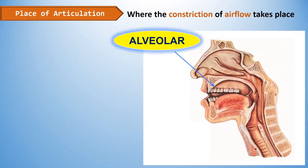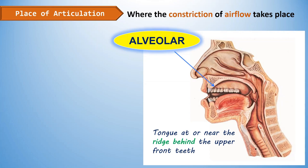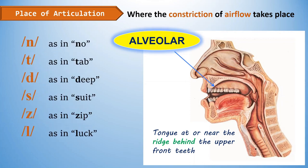The fourth place is alveolar. Alveolar sounds are produced with the tongue at or near the ridge right behind the upper front teeth — where your teeth meet your gums. The English alveolar sounds are: N as in 'no,' T as in 'tab,' D as in 'deep,' S as in 'suit,' Z as in 'zip,' and L as in 'luck.'